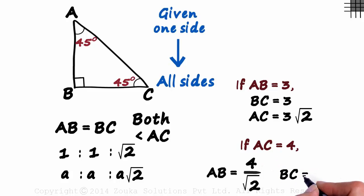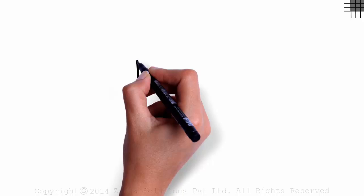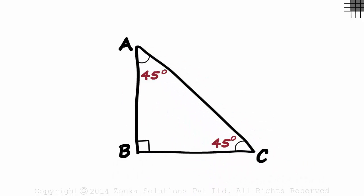And BC will also equal 4 by root 2. And just like I asked you in the 30-60-90 video, what should we do if we forget this ratio? If we forget the ratio, all we need is to draw the 45-45-90 triangle again.